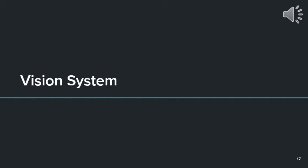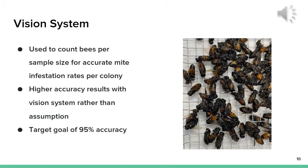My name is Brandon DeFore and I will be discussing the vision system portion of this project. The goal of the vision system was to develop an image processing model that would be able to detect the number of bees present to a 95% accuracy. The current method to count the number of bees is an estimation of 300 plus or minus 10%. This higher accuracy will allow the beekeepers to have more accurate infestation rates of their hives.